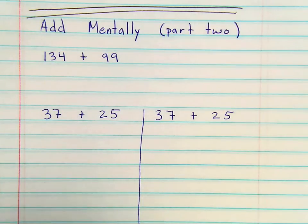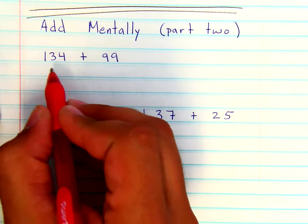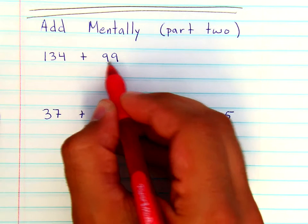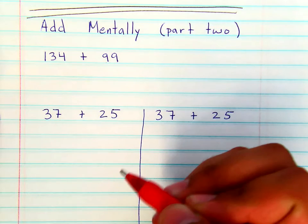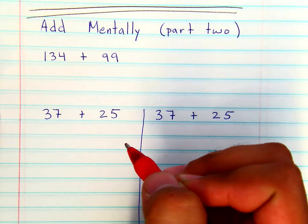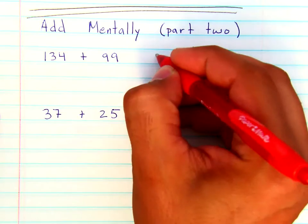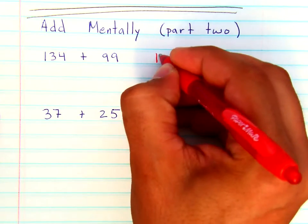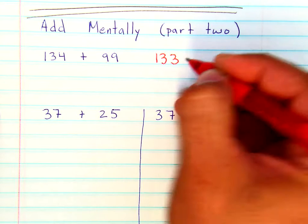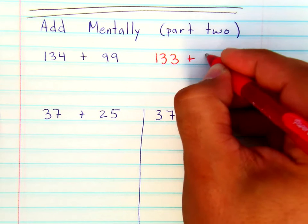Adding mentally can also include moving numbers from one to the other. So when you're adding numbers like 99 to another large number, if you think of 99 as 100, then this problem could be seen as 133 plus 100.